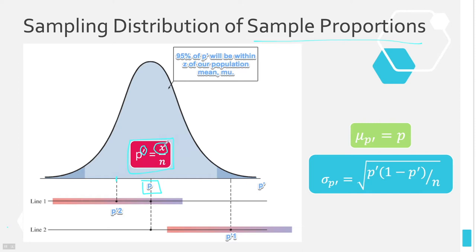The proportion formula uses x, where x is called the number of successes. A success here is not what we'd typically think of — it could be something bad, like being diagnosed with cancer. It's just whatever category we're concerned about in the problem. Anything not in our category of interest is a failure. X always represents our number of successes, n always represents our sample size, and p-prime is our sample proportion.